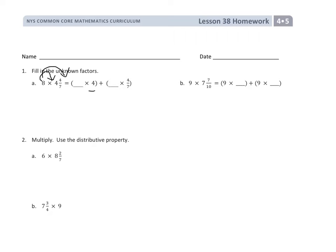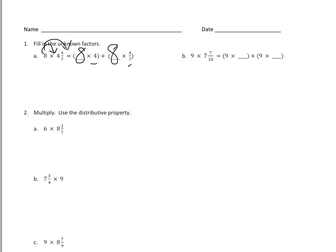So the first part of the mixed number is the whole number 4. The second part is 4 sevenths. So they want to know that they have to do 8 copies of 4 and 8 copies of 4 sevenths. And they're going to do the exact same setup in problem 2, except they're going to have to draw the parentheses, brackets, and the addition.